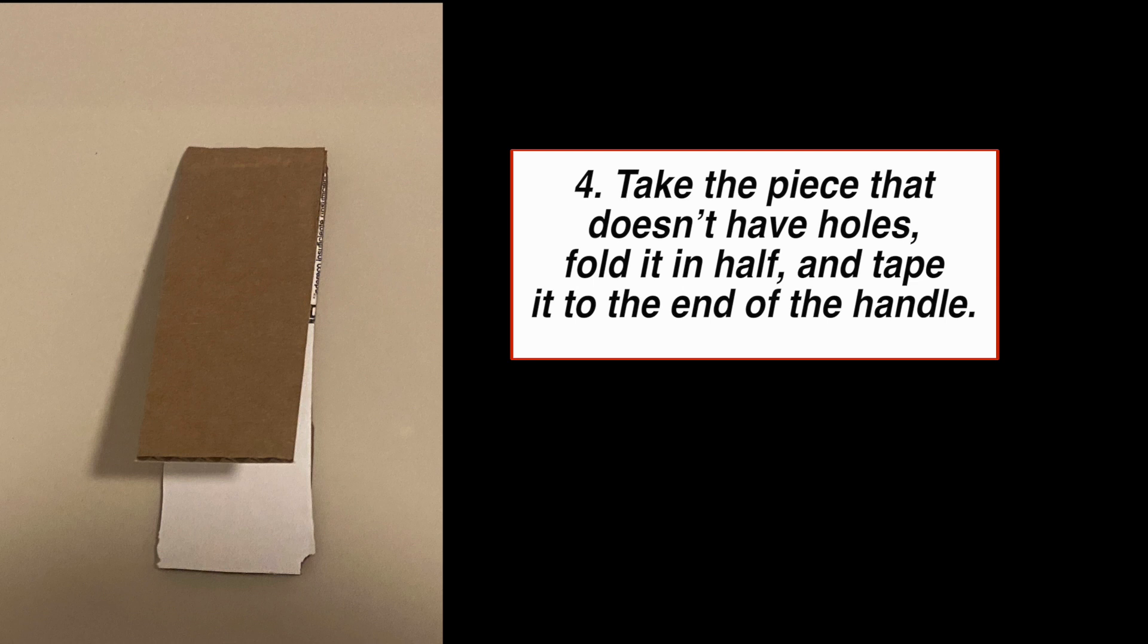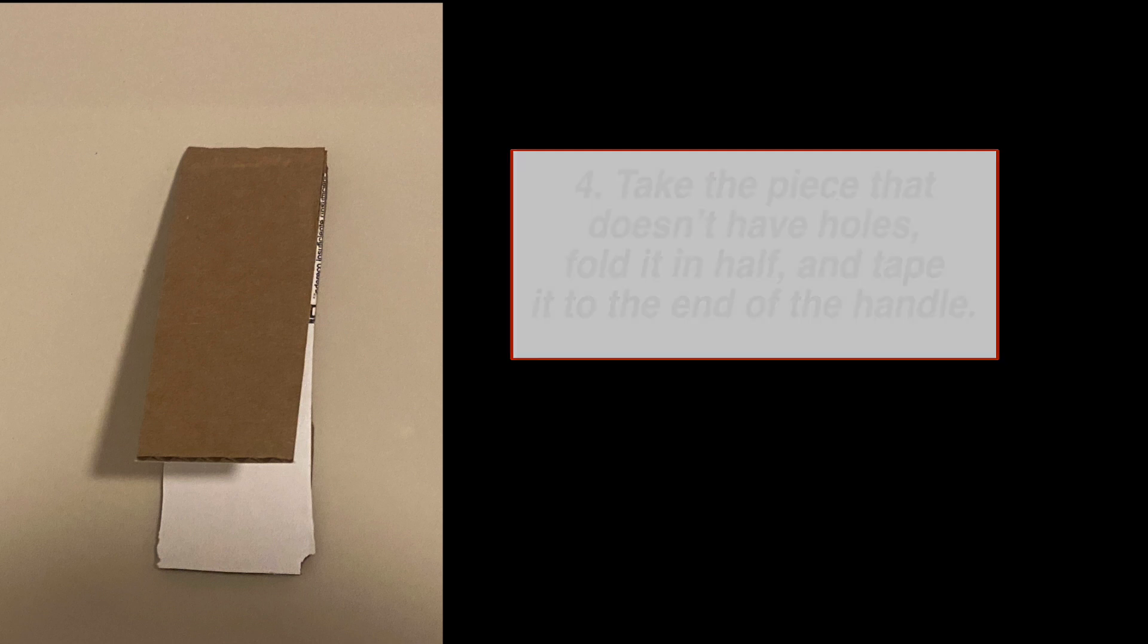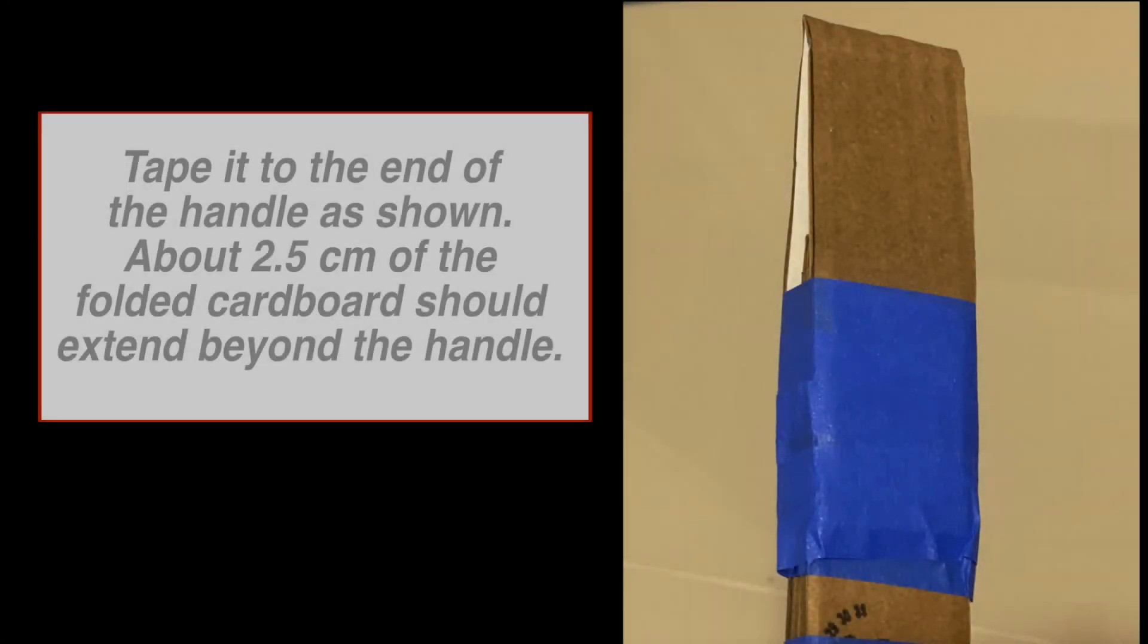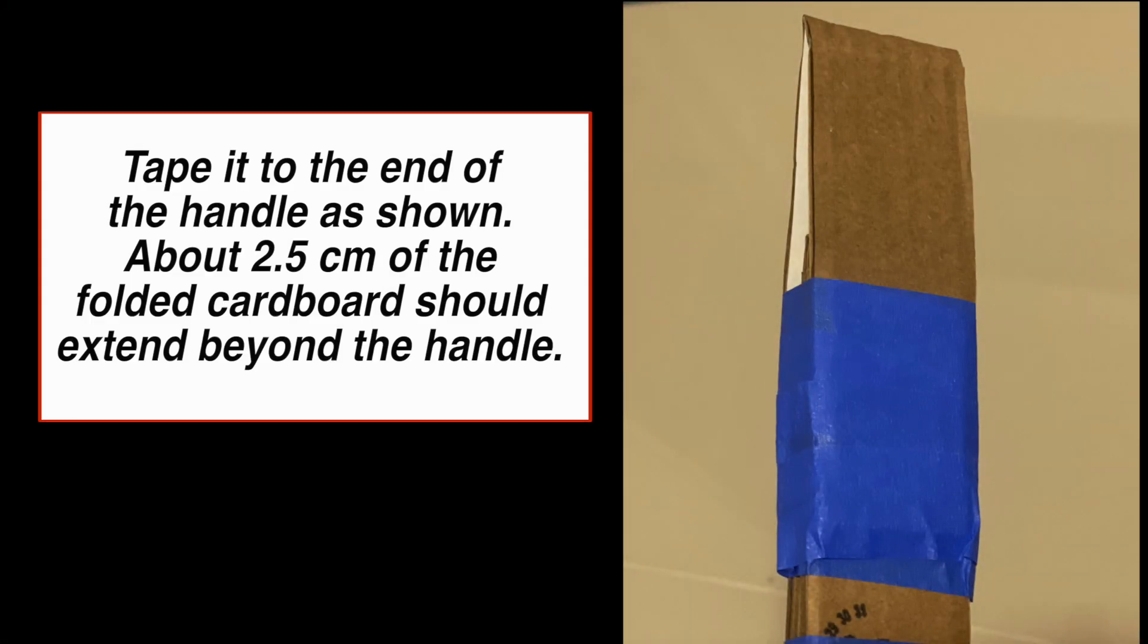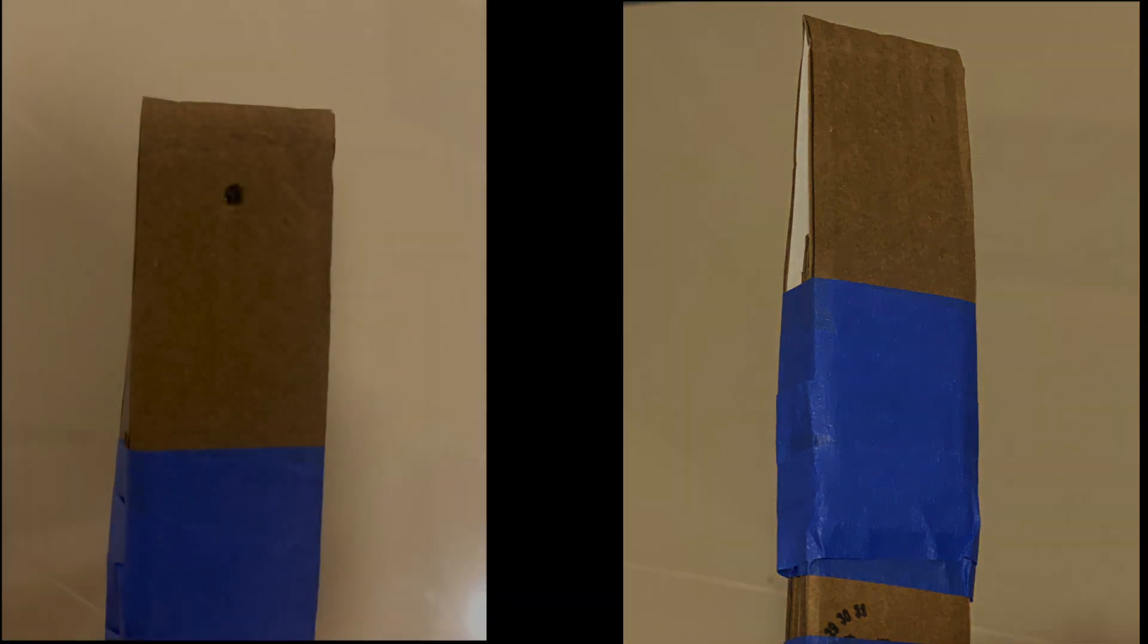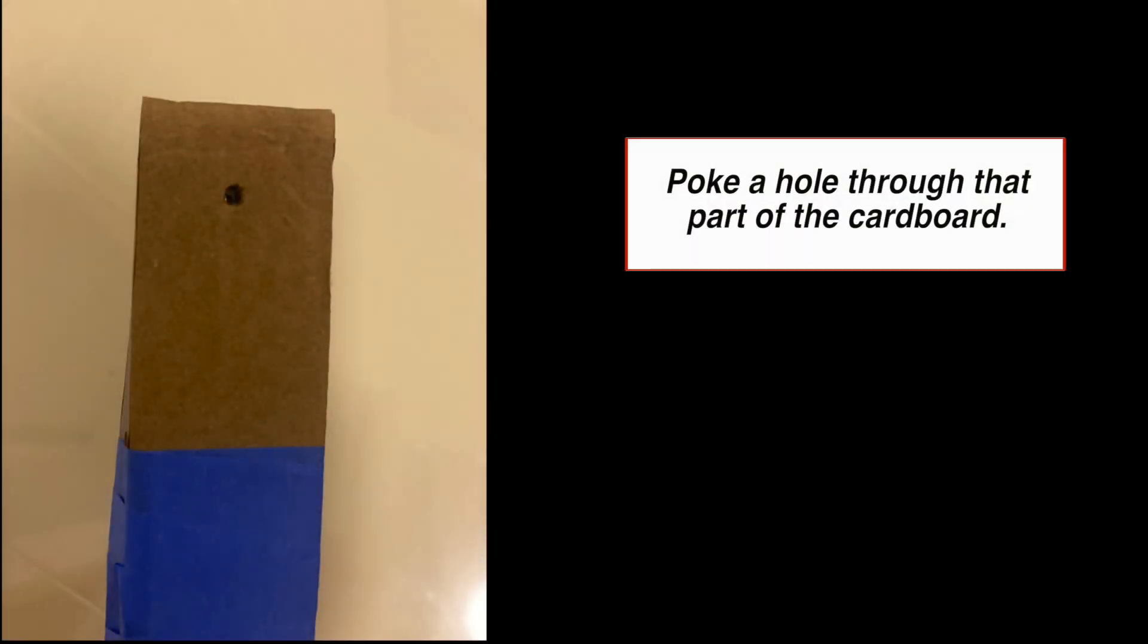Step 4. Take the piece that does not have holes, fold it in half and tape it to the end of the handle. Tape it to the end of the handle as shown. About 2.5cm of the folded cardboard should extend beyond the handle. You then poke a hole through that part of the cardboard.